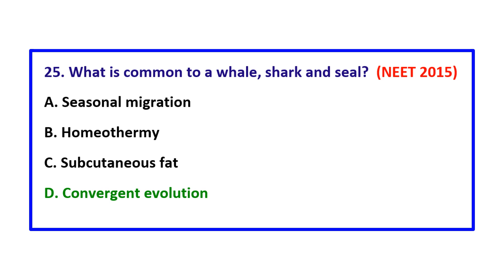Question: What is common to a whale, shark, and seal — the correct answer is convergent evolution.